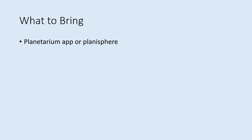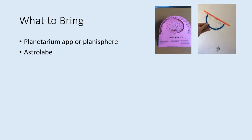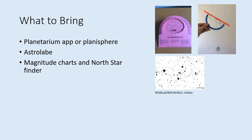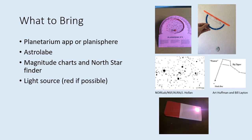Remember to bring your planetarium app or planisphere, as well as your astrolabe. Also, make sure you have access to the magnitude charts for the constellations and the finder for the North Star. It's good to have a light source, and if you can make it red, that helps your eyes stay dark adapted — even putting some thin red paper over the light can help. This gets more important the darker your observing site is. If the place you're observing from already has a lot of light, don't worry about having a red light, because your eyes won't get that dark adapted anyway.